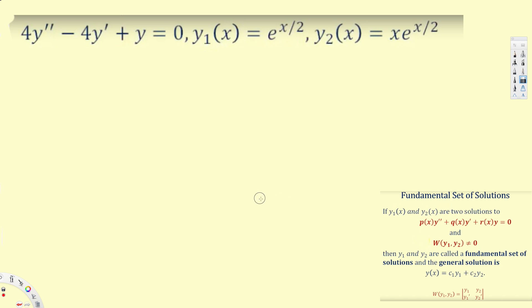In this video we are going to see how to verify a fundamental set of solutions for a linear second order homogeneous differential equation. This is homogeneous because it is equal to zero, and we have two solutions. First we verify whether these are solutions for the differential equation, then we compute the Wronskian. If the Wronskian is not equal to zero, we have verified a fundamental set of solutions, and we can express the general solution as y(x) = c1*y1 + c2*y2.